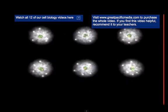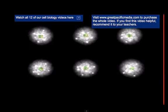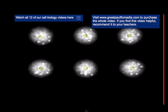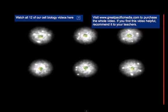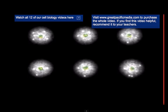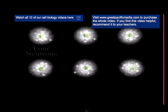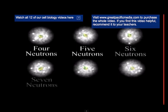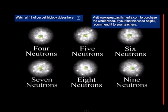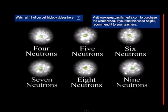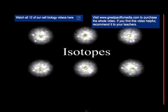While every atom of a given element has the same number of protons, the number of neutrons contained in the nucleus of atoms of the same element can vary. For example, carbon atoms can have four, five, six, seven, eight, or nine neutrons. Each of these different forms of carbon is referred to as an isotope.